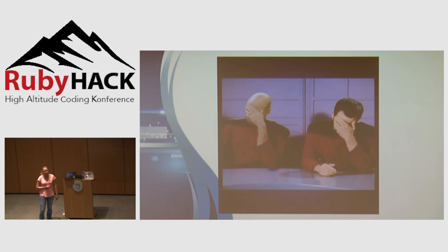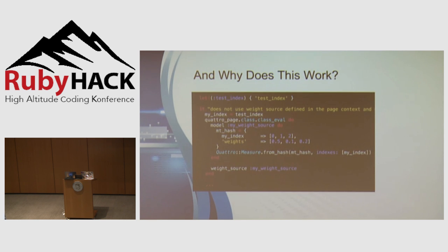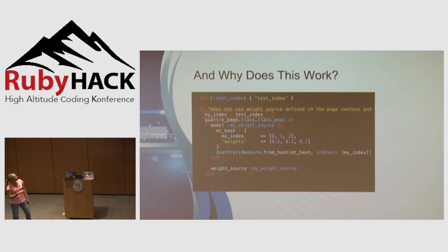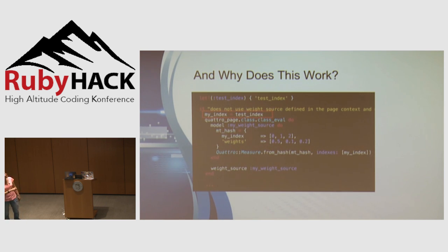So self inside the first block is pointing to the class of QuattroPage, and self inside the second block is also pointing to the class of QuattroPage. There's no method called test_index defined on that class, and there's also no local variable by that name anywhere in scope — and that explains why this example failed. But it also explains why using a local variable worked, because it's the environment pointer ladder that gives the inner block access to any local variables in the surrounding scope.